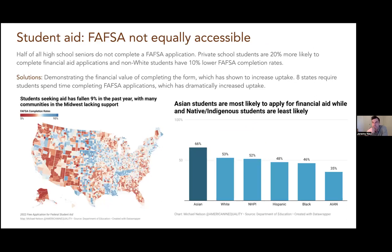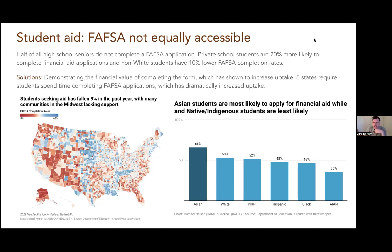Several folks have tried to help students with FAFSA applications, or have students in their class who were only able to get into higher education programs through the financial aid they were able to get. But right now, half of all high school seniors do not complete a FAFSA application. I've actually been seeing quite a handful of interesting new tools trying to take advantage of large language models to help coach students through these processes. I'm curious to see if these new fancy technologies will actually make a difference.